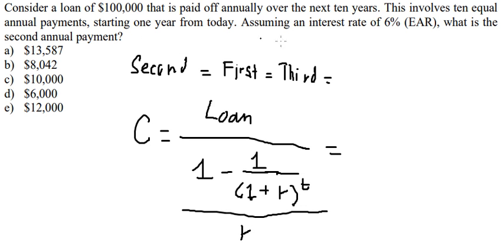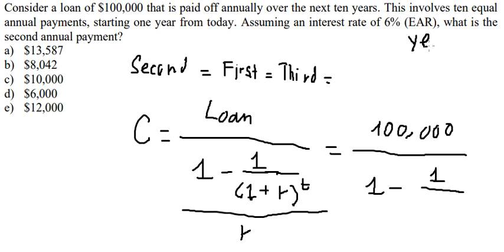The loan is $100,000. The interest rate is 6% per year, so r equals the EAR. I will put 1 plus 6% here. We have 10 years, so that should be 10.